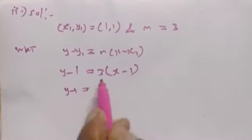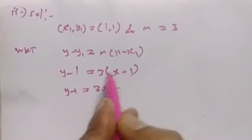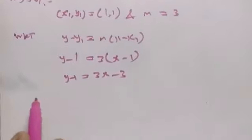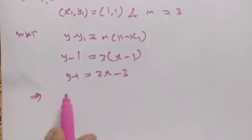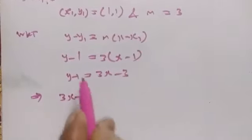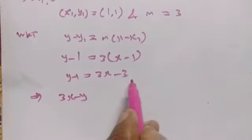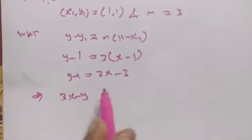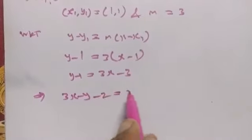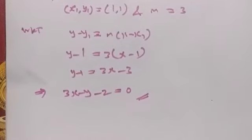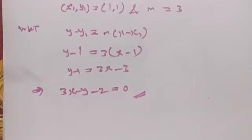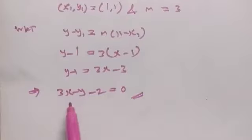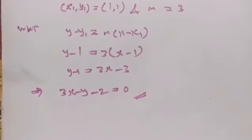So y minus 1 equals 3 into x minus 1, which gives 3x minus 3. The required equation is 3x minus y, and -1 plus 1 minus 3 plus 1 is -2, equal to 0. Therefore, the required equation of the straight line is 3x minus y minus 2 equal to 0.